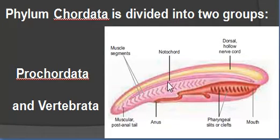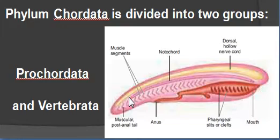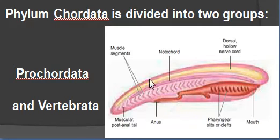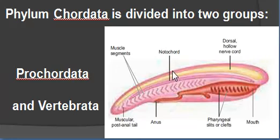This is the notochord. The notochord is found in the embryonic stage in all chordates. But in fishes, amphibians, reptiles, birds, and mammals, the notochord is replaced by a bony backbone called the vertebral column. The yellow-colored structure shown is the nerve chord, which is present in the embryonic stage of all chordates. In higher chordates, the nerve chord differentiates into the brain and spinal cord. Chordates also show gill slits, which in fishes are covered by a gill cover.